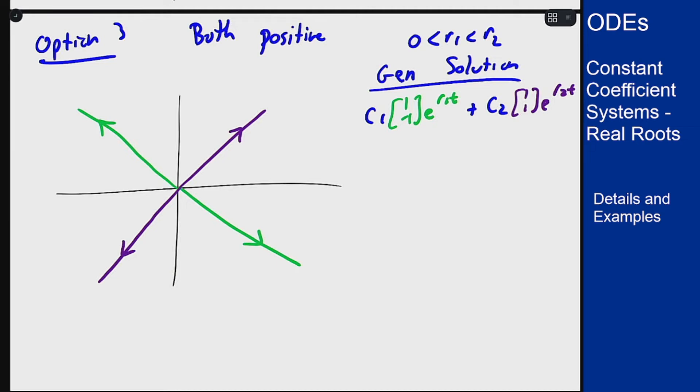What happens to an interim solution? As t gets bigger here both e to the r1t and e to the r2t go off to infinity. However because r2 is bigger, e to the r2t goes to infinity faster than e to the r1t.